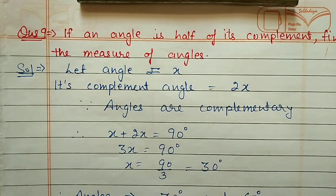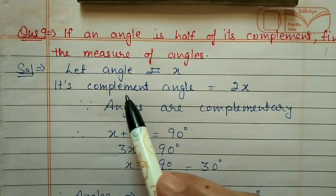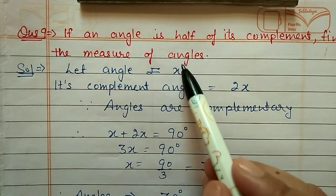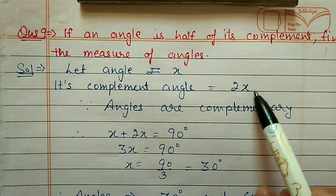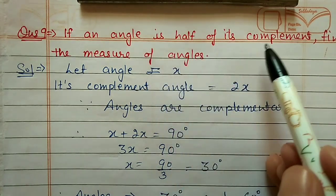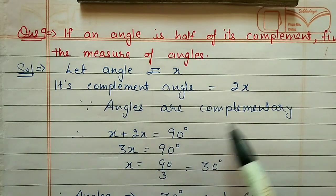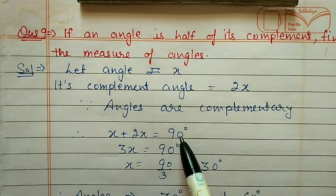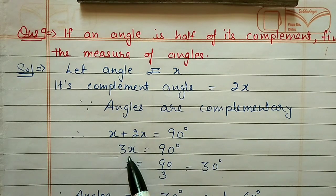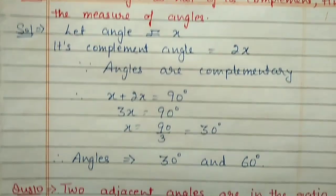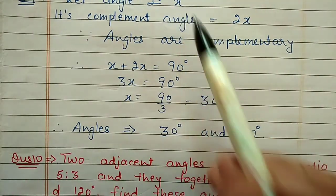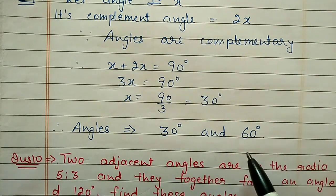Question number nine: if an angle is half of its complement, find the measure of the angle. Let the angle be x, then its complementary angle is 2x, because x is half of 2x. Since these two angles are complementary, x + 2x = 90 degrees, so 3x = 90, giving x = 30 degrees. The first angle is 30 degrees and the second angle (2x) is 60 degrees.